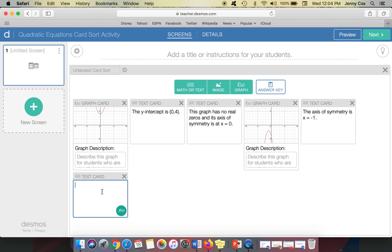So you might have to adjust your cards as you go because this one also has no real zeros. So then I could say something like the vertex is at (-1, -2).